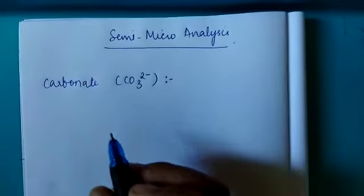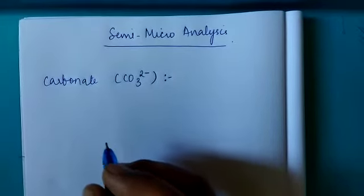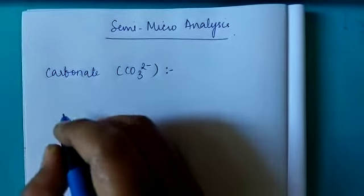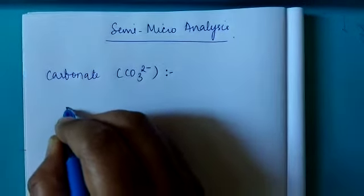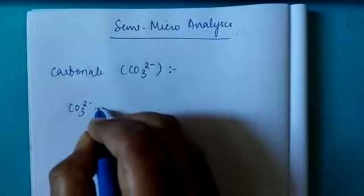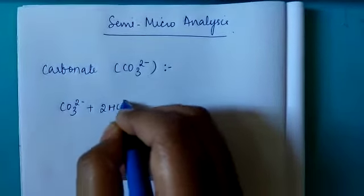Let us see the equations involved in the analysis of carbonate ion. In the identification test, we will take the salt and add dilute HCl.